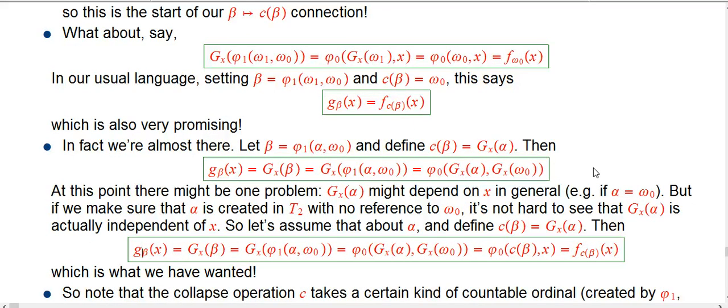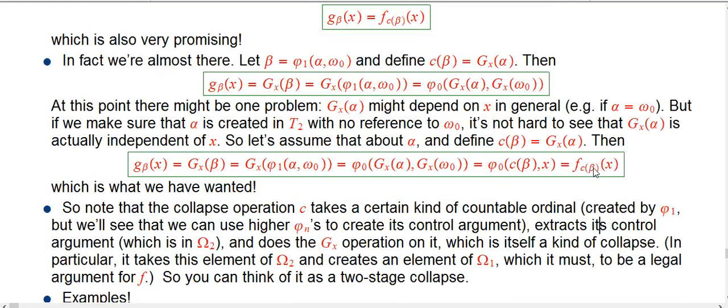So we've now created the c function. This specific kind of collapse that takes an ordinal, a big countable ordinal, creates a smaller one so that the g of the original guy is exactly equal to the f using the smaller ordinal. I think I just note that here.